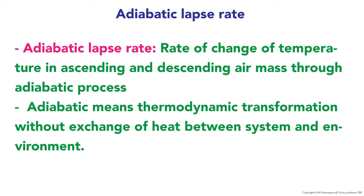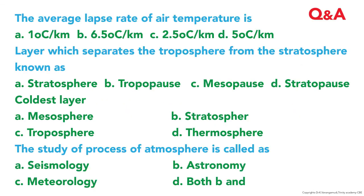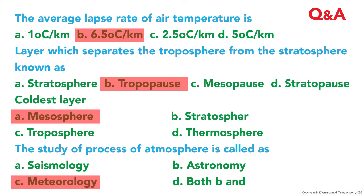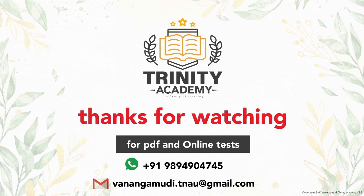For the question and answer section: The average lapse rate of air temperature is 6.5 degrees Celsius per kilometer. The layer which separates the troposphere from the stratosphere is known as the tropopause. The coldest layer is the mesosphere. The study of processes of the atmosphere is called meteorology.